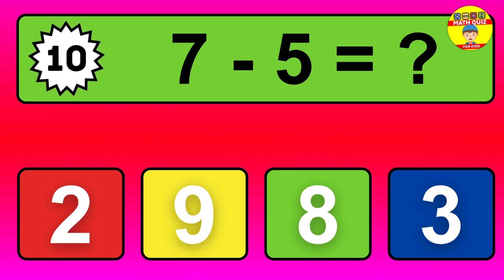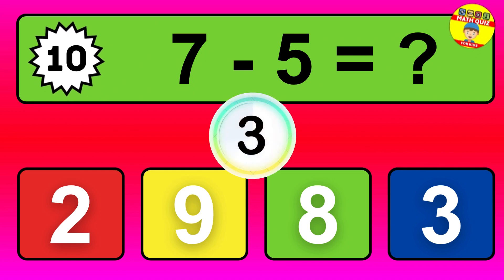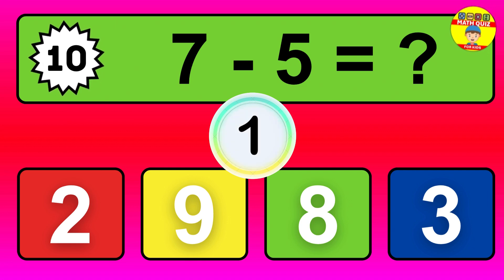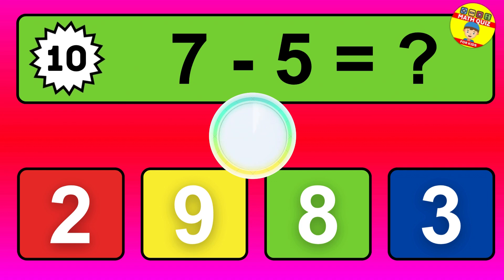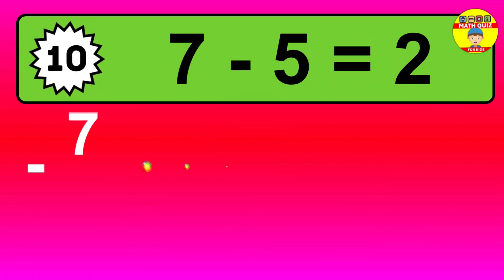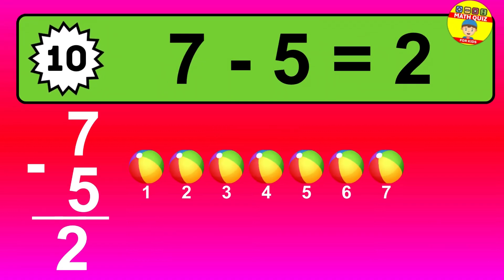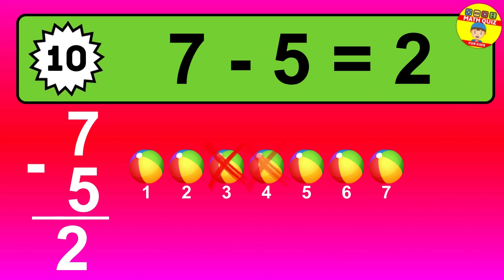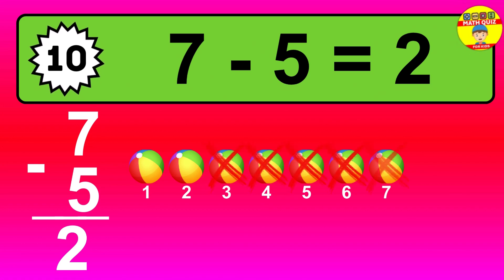Question ten: seven minus five equals what? The answer is seven minus five is two. Let's count it. One, two.